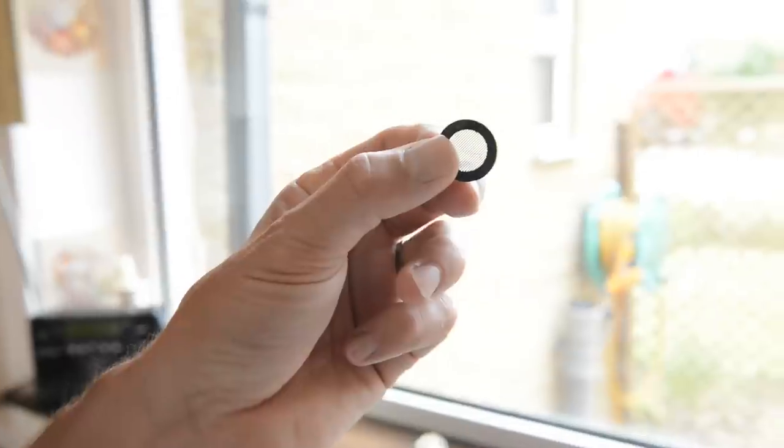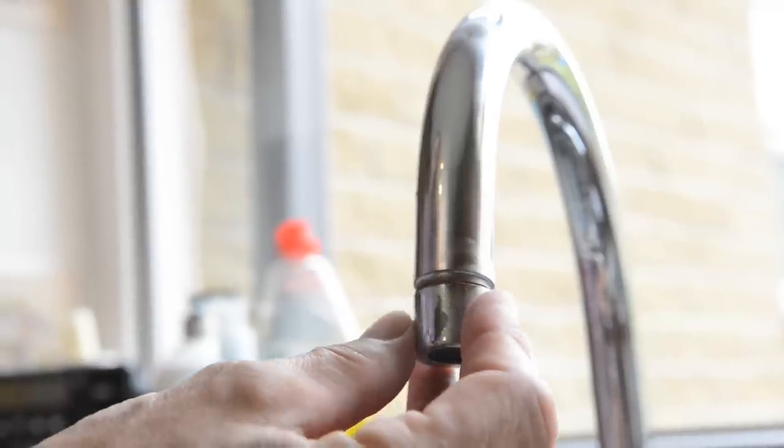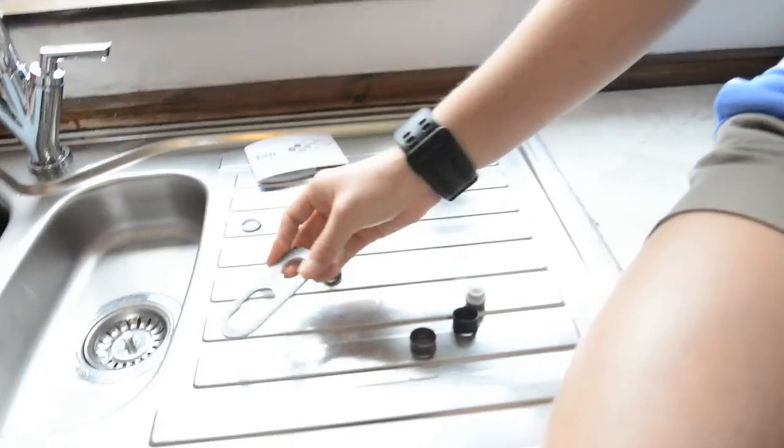Ok, we need to now place the rubber seal back in its original position and then simply screw the nozzle back onto the tap. There you go Evie, do you want to finish tightening that?